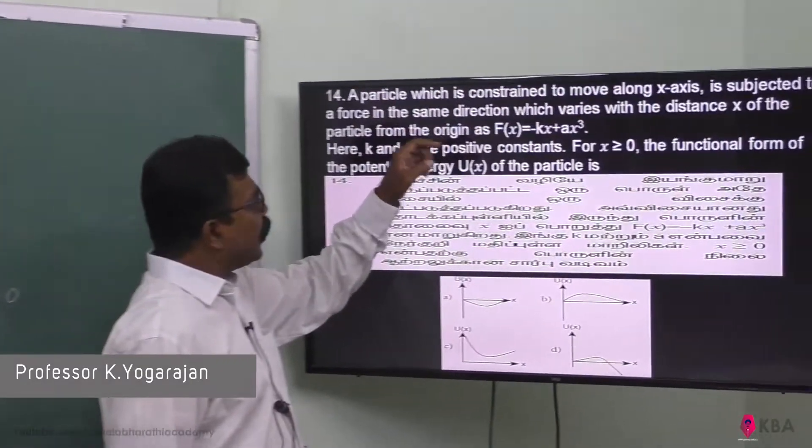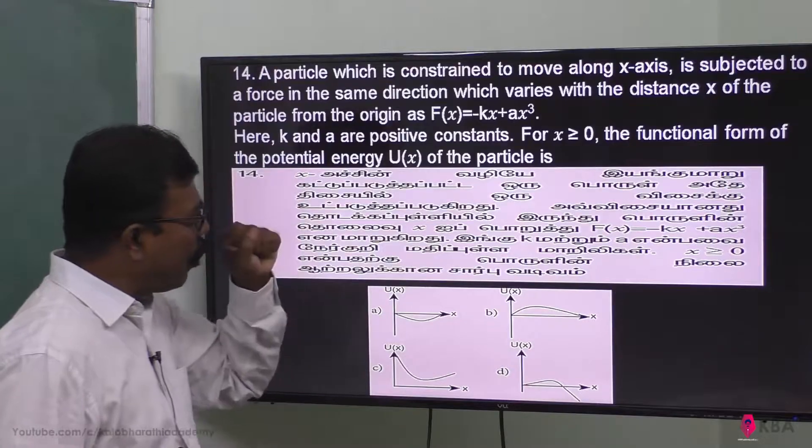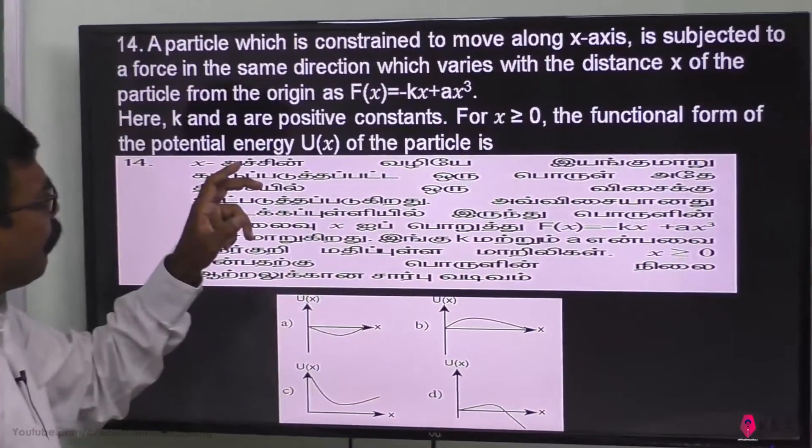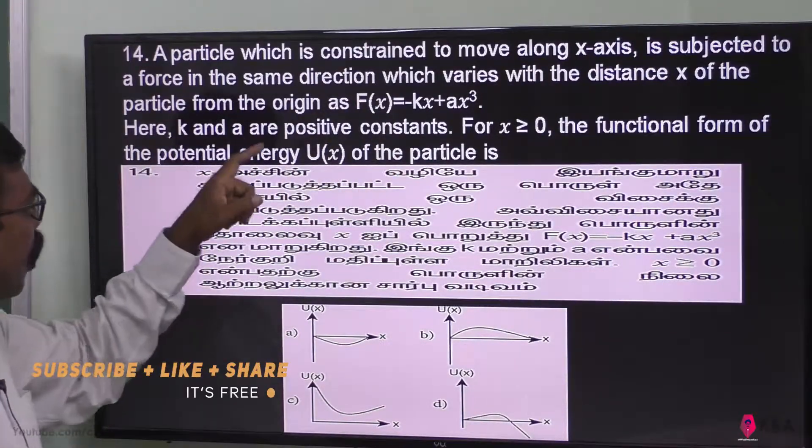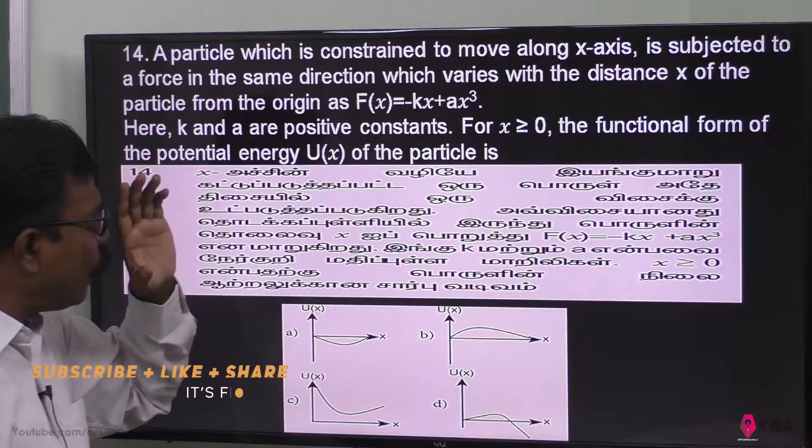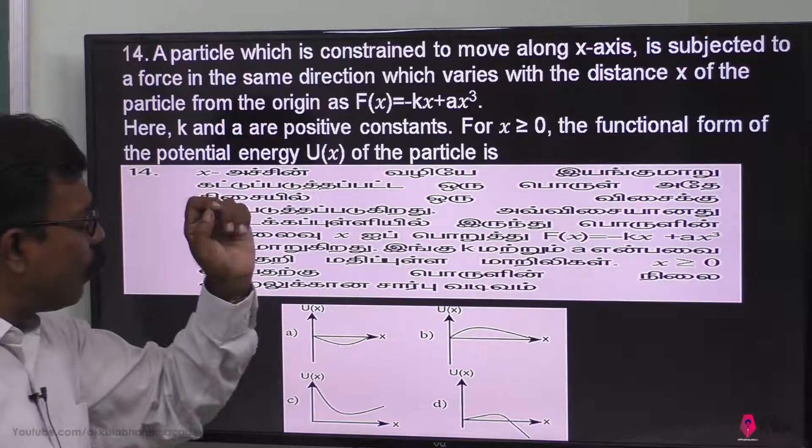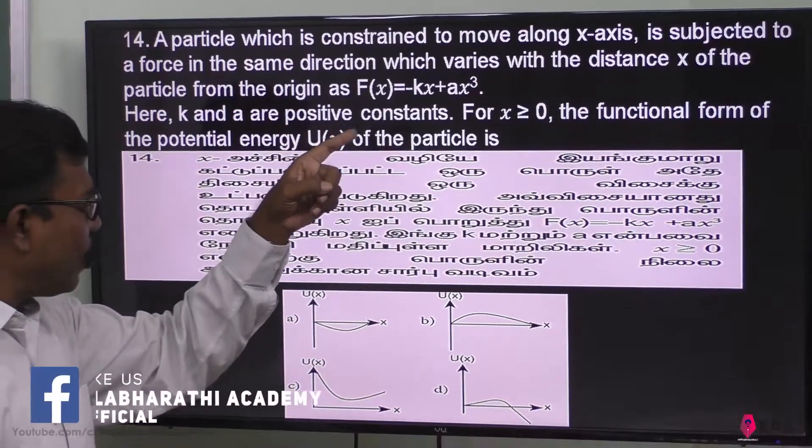A particle which is constrained to move along x-axis is subjected to a force in the same direction which varies with the distance x of the particle from the origin as F(x) = -kx + ax³. The particle is moving along the x-axis with force minus kx plus ax cube.